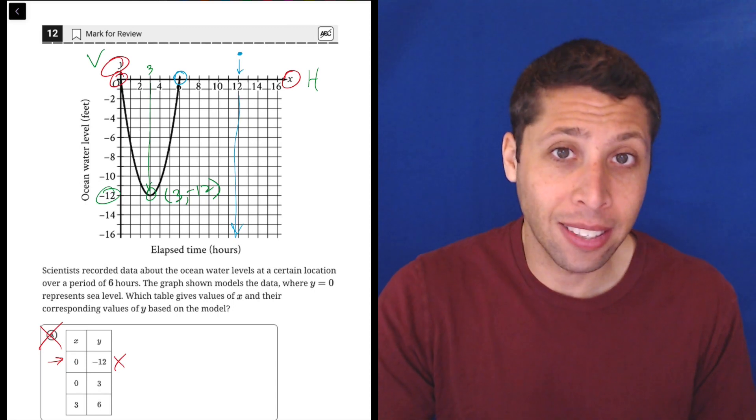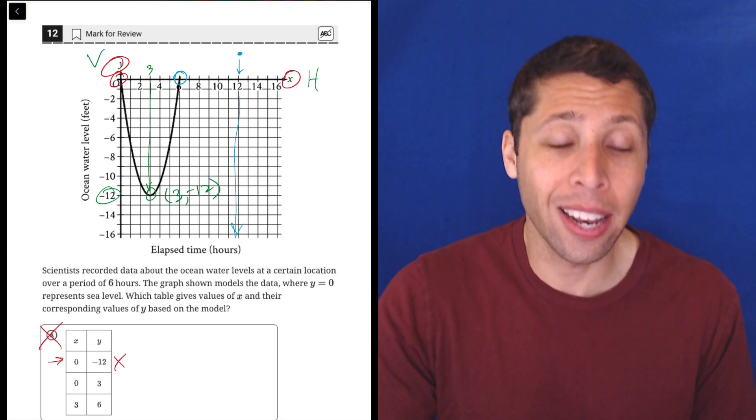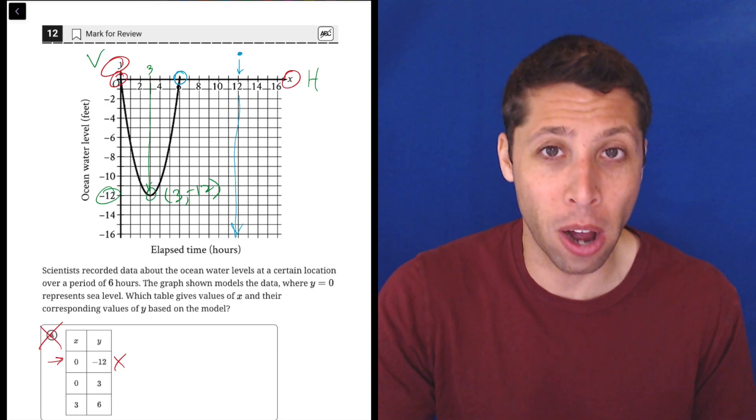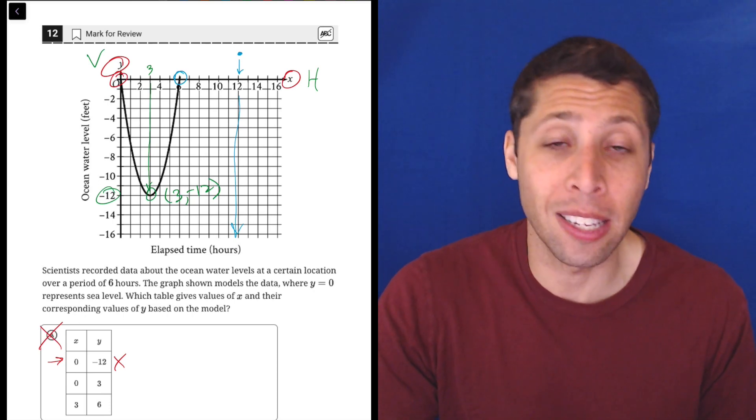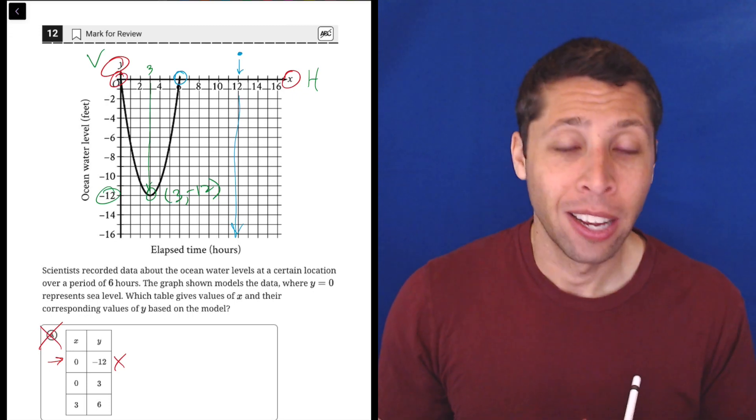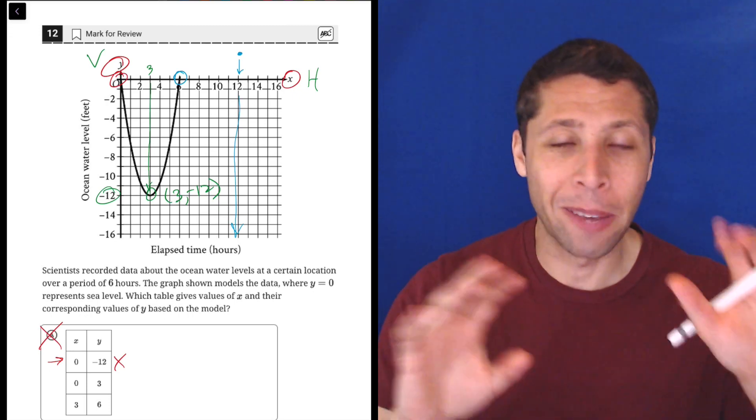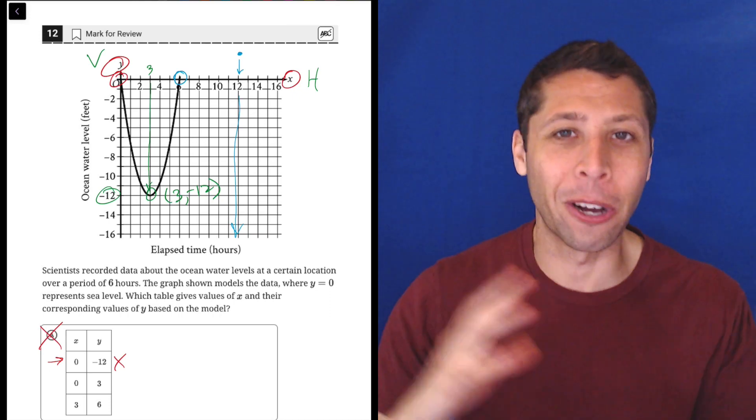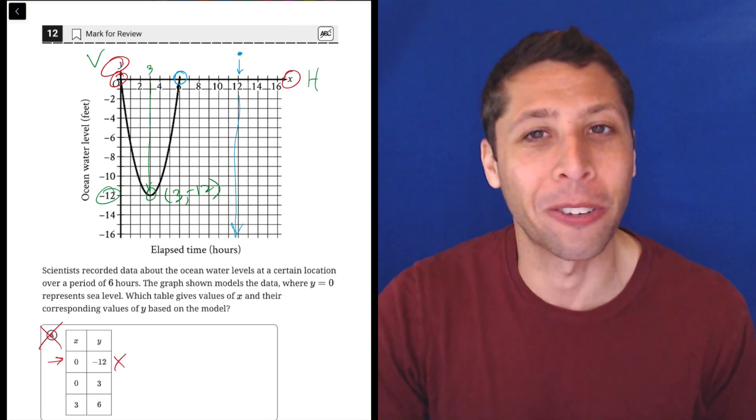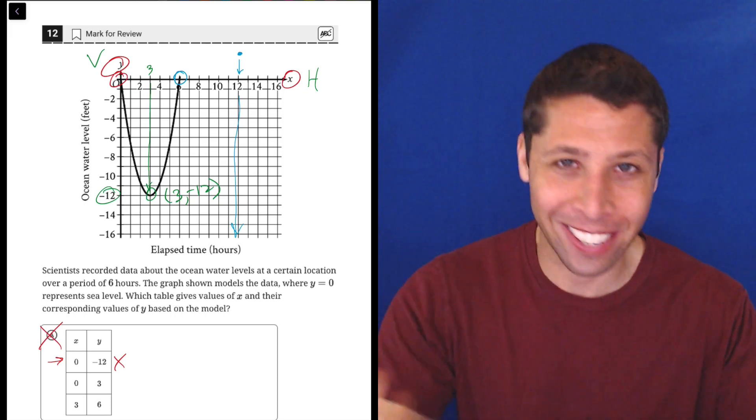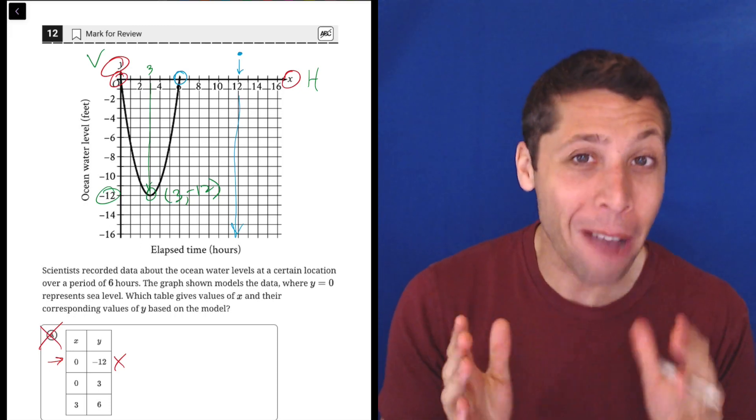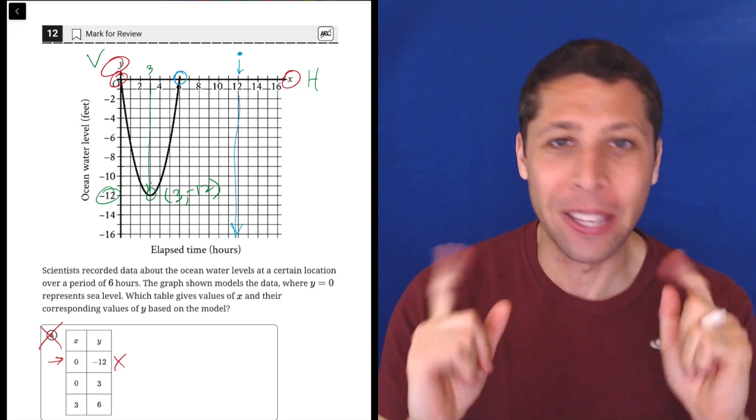So hopefully this all makes sense. Like I said, the most important thing here that you cannot under any circumstances get wrong is confusing your X and Y needs to be as automatic as left and right, which I realized, I don't know if this image is flipped and mirrored. So just know this is my left hand, whether it looks like it's on the left of the screen or not. I know my left and right in the same way I know my X and my Y. So I would never get stuff like this wrong. Be the same way.